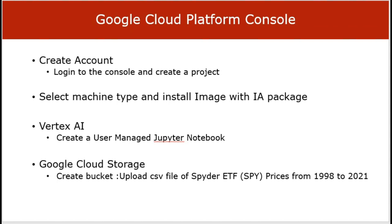The key things necessary are to create an account on the Google Cloud Platform console and then create a project, as everything on Google is tied to a project. From there, select the machine type, install the image with the AI package, use Vertex AI to create the user-managed notebook, and then upload a CSV file with the ETF SPY prices from 1998 to 2001.